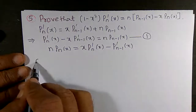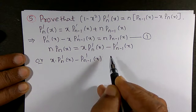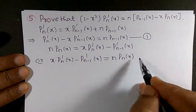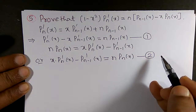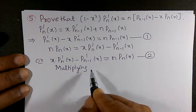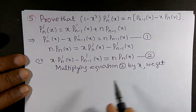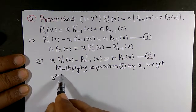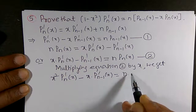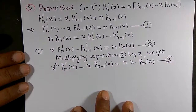I will rewrite this and call it Equation 2. Now I will multiply Equation 2 by x. So what we get is: x² · P'ₙ(x) - x · P'ₙ₋₁(x) = n · x · Pₙ(x). I will call this Equation 3.